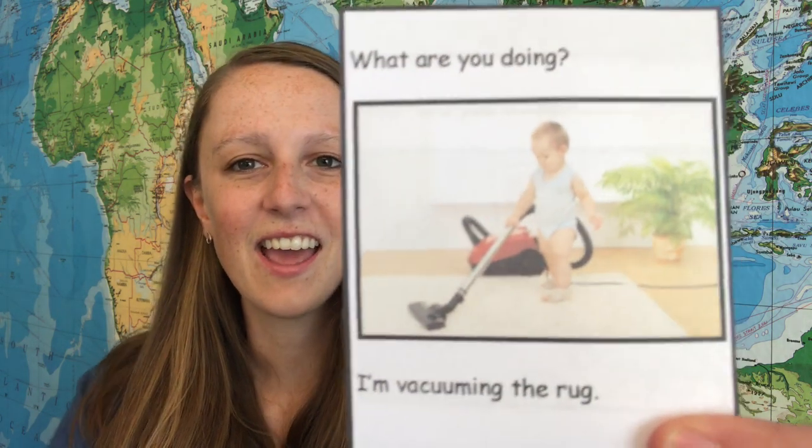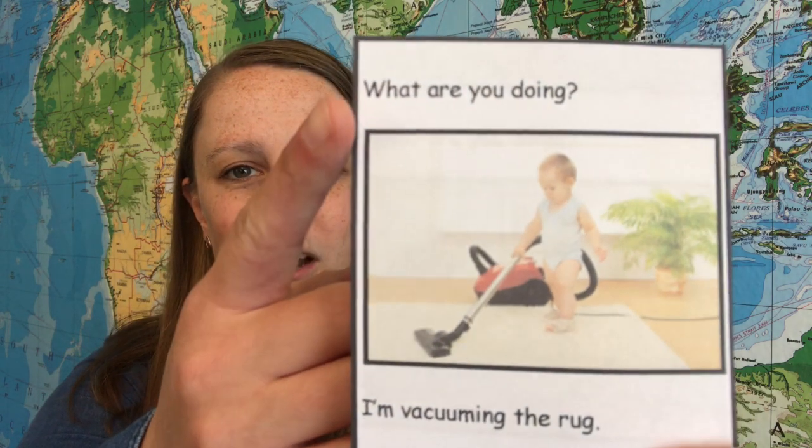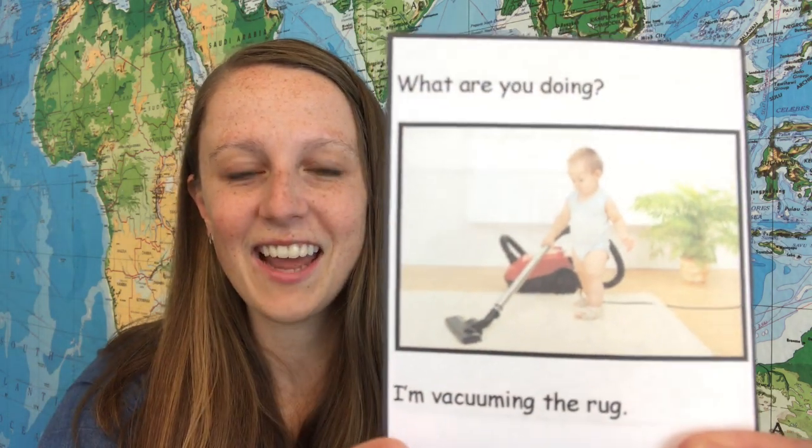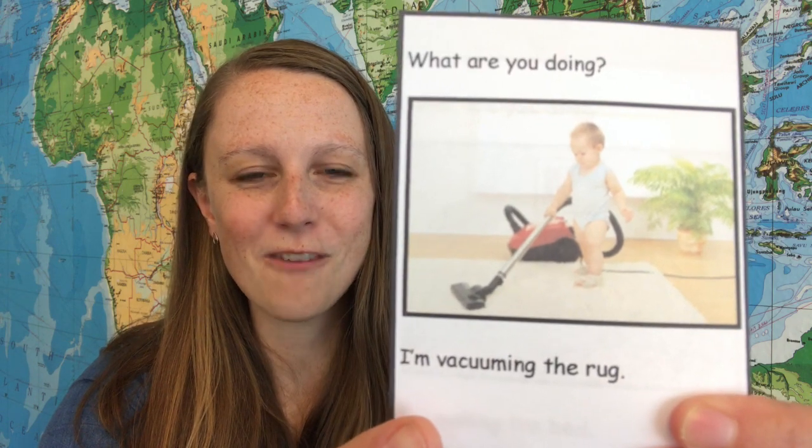The second activity is another speaking activity with an optional writing component. It uses the same vocabulary and the same images as well. In this case, students practice the question: what are you doing? Each student will have a card that has that target question — what are you doing? — and their response sentence, for example, I'm vacuuming the rug. Students will go around to their classmates and ask them, what are you doing? And classmates will respond with the sentence on their card.